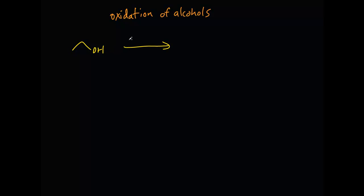If we add KMnO4, which is a pretty strong oxidizing agent — whenever you think of oxidation, the first thing that should pop into your head is a widely used oxidizing agent like potassium permanganate — that's going to take the oxidation all the way to the carboxylic acid. Always think of the introduction of the carbonyl group, the C double bond O. And if you oxidize it even further, you get the addition of the OH. So the final oxidation product of a primary alcohol is the carboxylic acid.